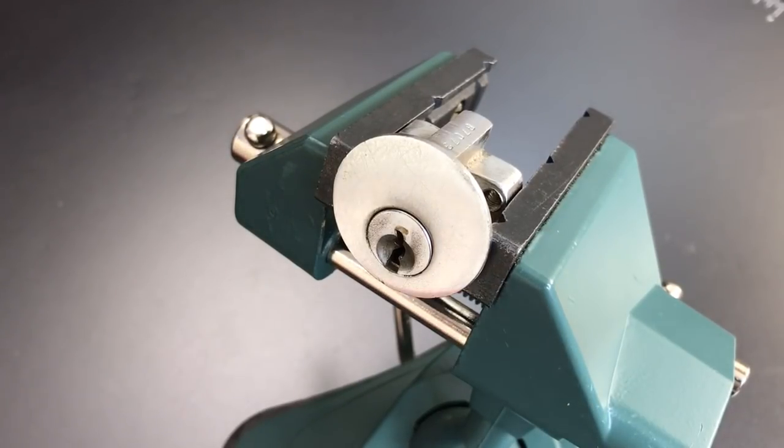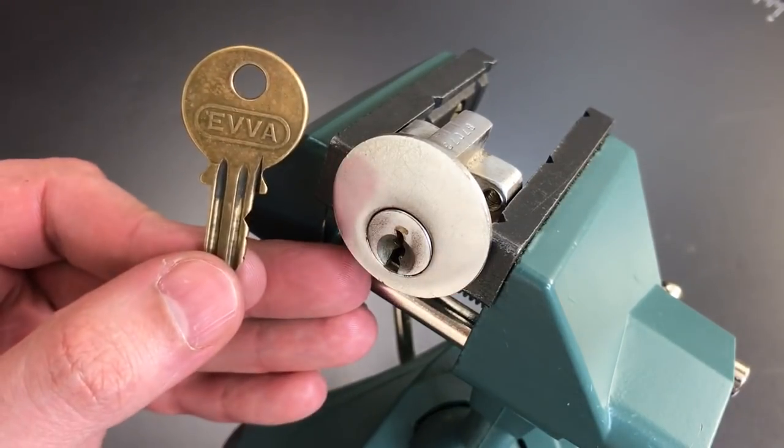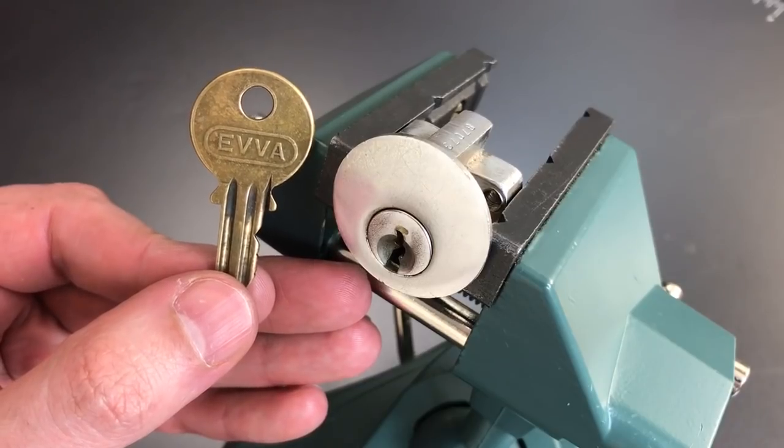This is the Lockpicking Lawyer, and what I have for you today is a relatively old EVA rim cylinder. Now this is not a model that I'm familiar with, and I only know that it's an EVA product because of the key that came with it, which has the EVA name on it.